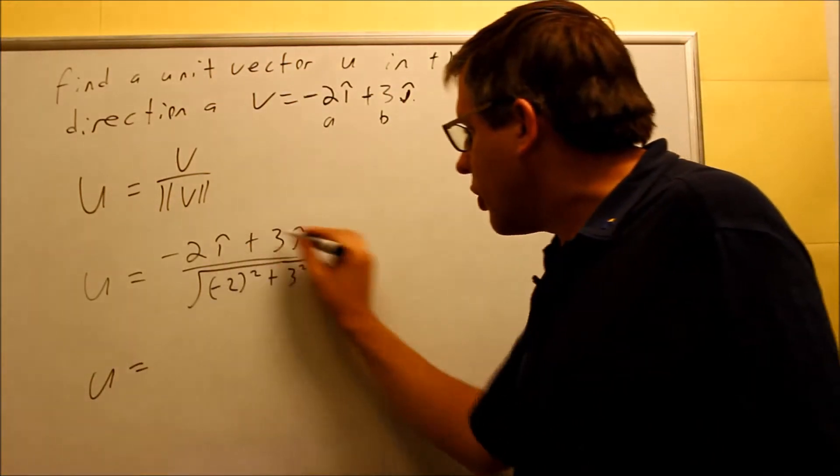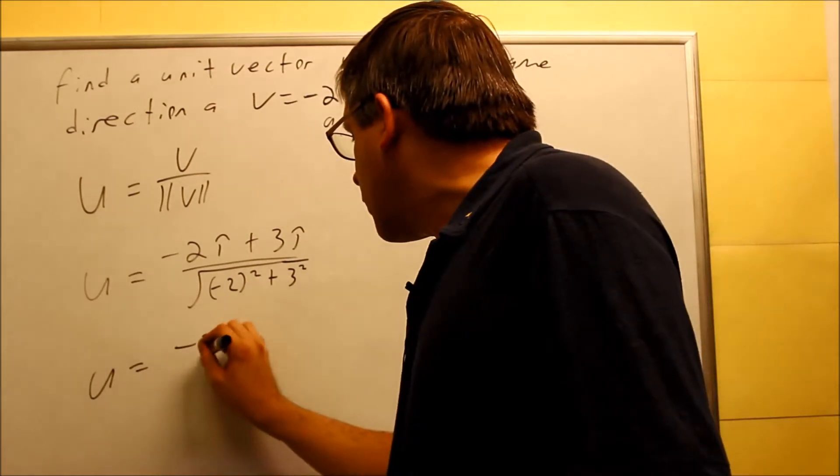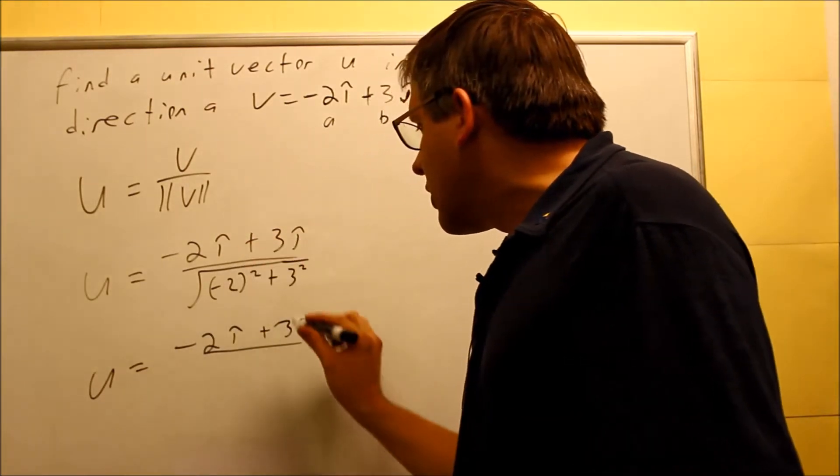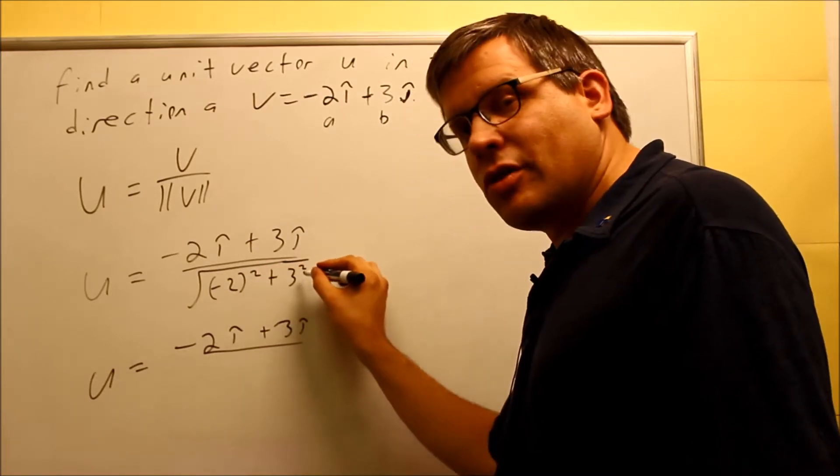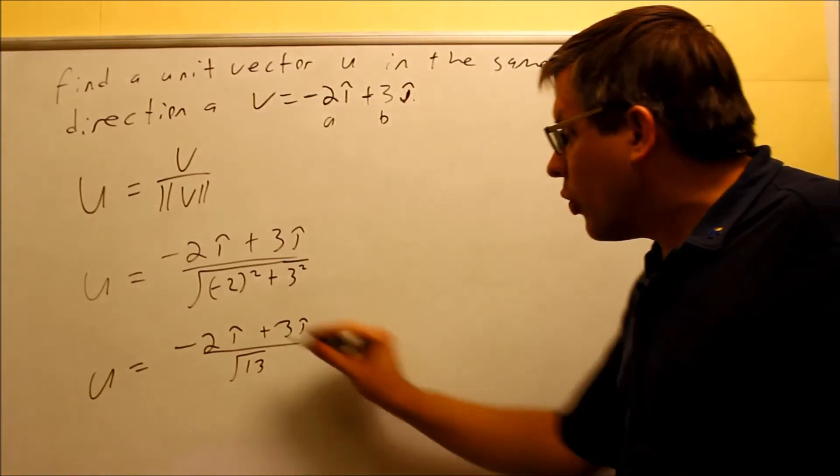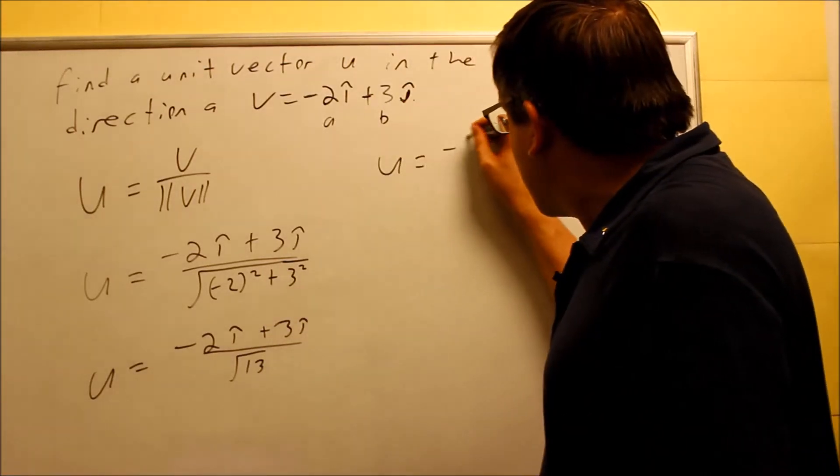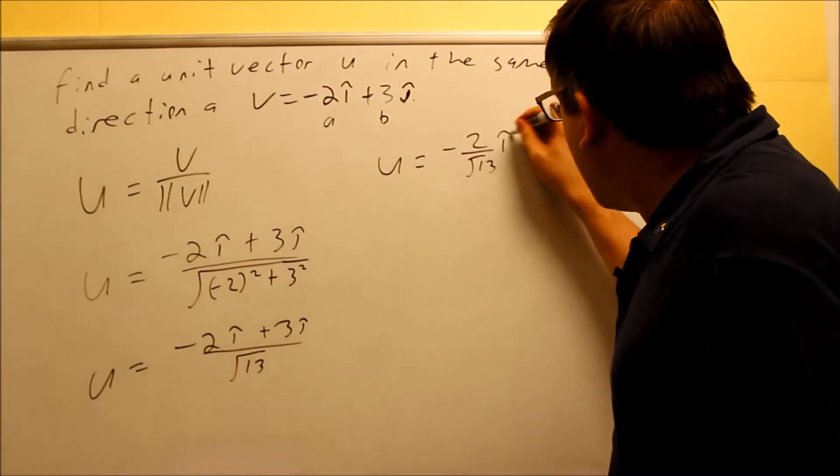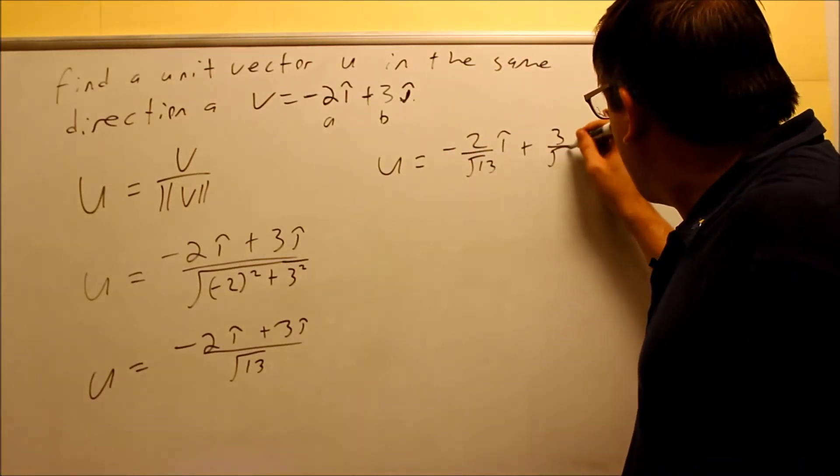So we're going to do this part. We get negative 2I plus 3J over this. That's 4 plus 9 is 13. So square root of 13 we get here. We want to break this up. So we're going to do U equals negative 2 over the square root of 13. That's going to be I and 3 over the square root of 13J.